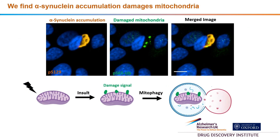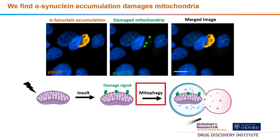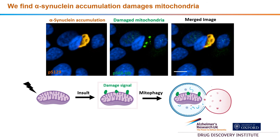What we find is that alpha-synuclein accumulation causes mitochondrial damage. Cells that have these alpha-synuclein accumulations, shown in orange, are also positive for mitochondrial damage signals shown in green, and these damage signals are not seen in healthy cells that do not have alpha-synuclein accumulations. These mitochondrial damage signals trigger the mitochondria to be destroyed, as they are no longer functioning properly — a biological process called mitophagy. We can develop drugs that promote this mitophagy and therefore promote the removal of this damaged pool of mitochondria, which then promotes the biogenesis, or creation, of new healthy mitochondria.